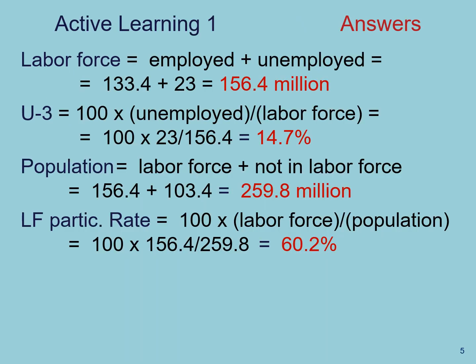Thank you for your responses. Here are the solutions — it is pretty straightforward; you just plug in the numbers from the table. The U3 statistic is the official unemployment rate as of April 2020. This is an especially high number, considering that we had the lowest unemployment rate in a very long time just a few months before. The pandemic related to COVID-19 made this unemployment rate jump from the lowest to one of the highest we've seen in a very long time.